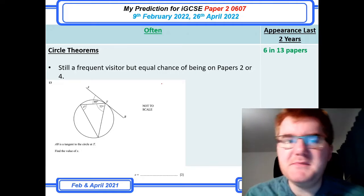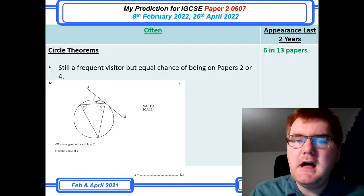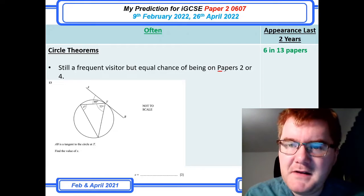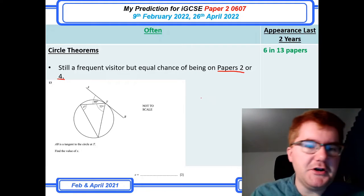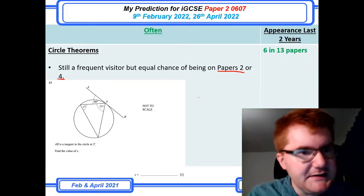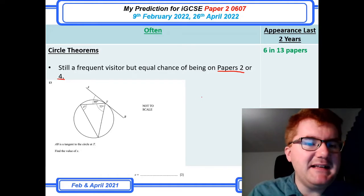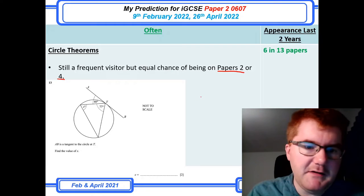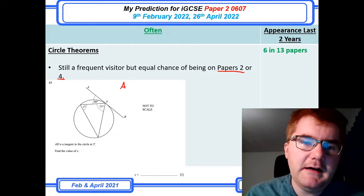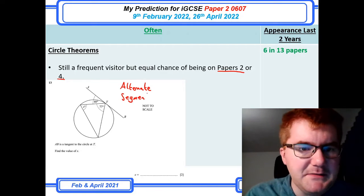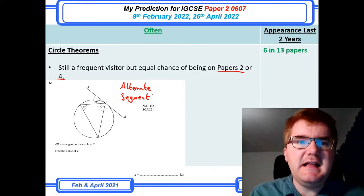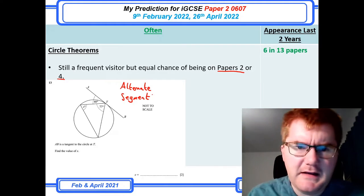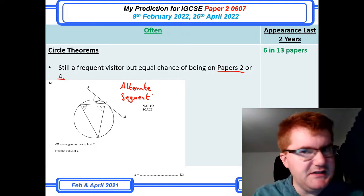Circle theorems are still a frequent visitor on the papers, generally spread quite evenly over Papers 2 and 4. The questions are usually not on the most complicated side, but you need to know the basic facts to work out various angles. One thing to be particularly aware of is the alternate segment theorem, which appears more often than you'd think on both Paper 2 and Paper 4 circle theorem questions.